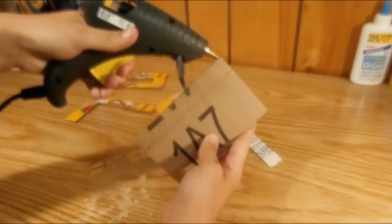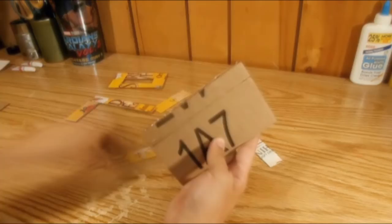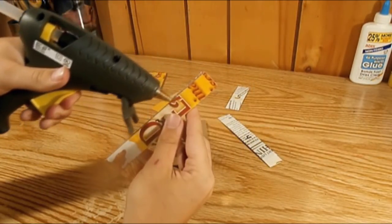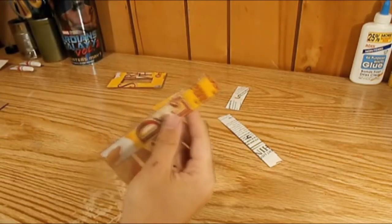Then I hot glued the piece we made with template 4 onto the back like so. Then I hot glued the front to the rest of the Walkman, like the way you see here.